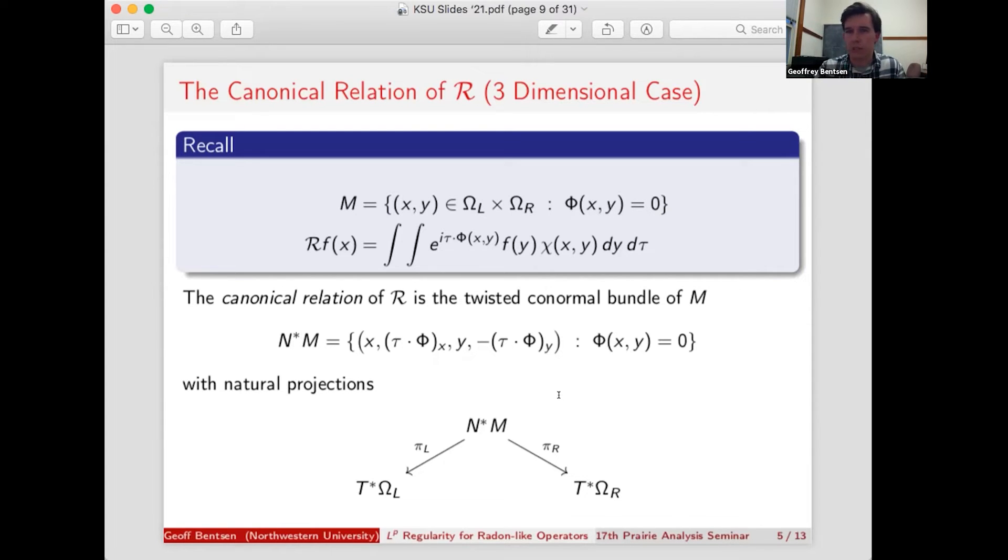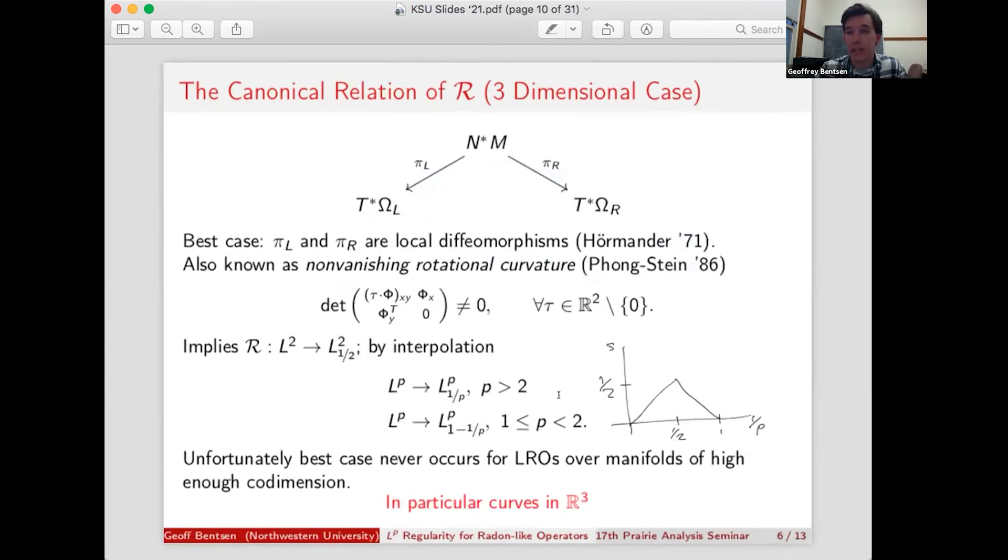So now that we've talked a little bit about the canonical relation, what does the theory of FIOs say about L2 regularity for these? The best case occurs when pi l and pi r are both local diffeomorphisms. This goes back to the work of Hormander. In the realm of radon transforms and radon-like operators, this goes by another name. It's known as non-vanishing rotational curvature. That terminology is due to Fefferman and Stein. In both cases, in our situation, the non-vanishing rotational curvature means that this determinant is non-vanishing for all non-zero choices of tau.